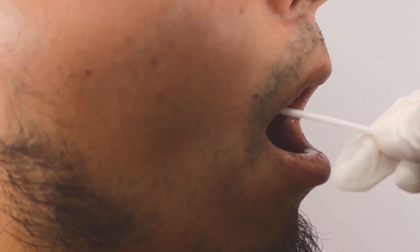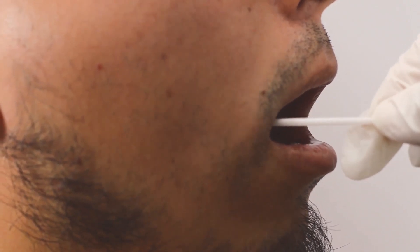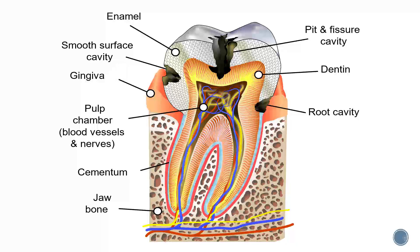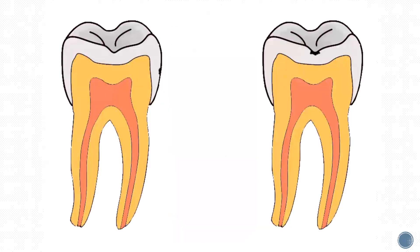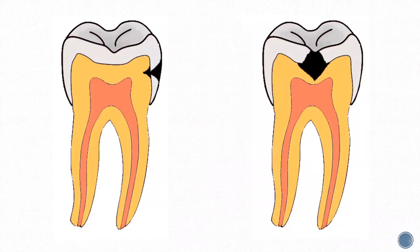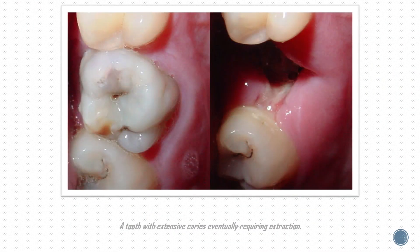A person experiencing caries may not be aware of the disease. The earliest sign of a new caries lesion is the appearance of a chalky white spot on the surface of the tooth, indicating an area of demineralization of enamel. As the lesion continues to demineralize, it can turn brown but will eventually turn into a cavitation. Before the cavity forms, the process is reversible, but once a cavity forms, the lost tooth structure cannot be regenerated. A lesion that appears dark brown and shiny suggests dental caries were once present but the demineralization process has stopped, leaving a stain. As the enamel and dentin are destroyed, the cavity becomes more noticeable, and the affected areas of the tooth change color and become soft to the touch.